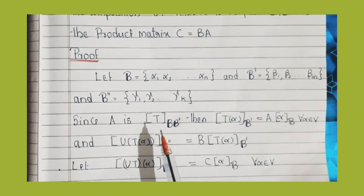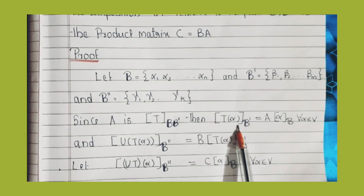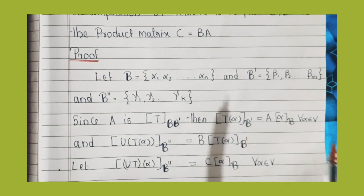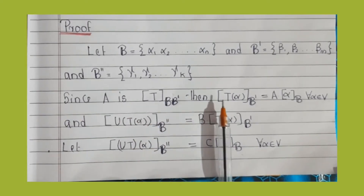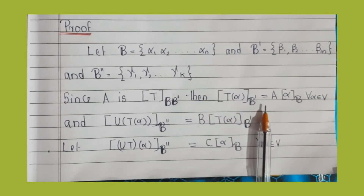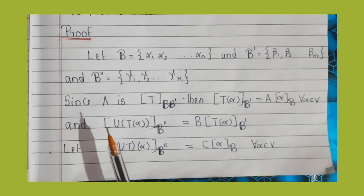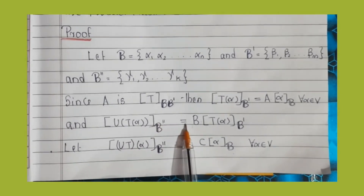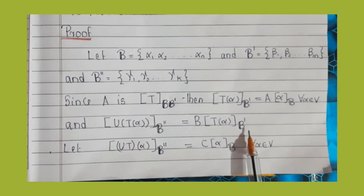Since A is the matrix of T related to BB', then the matrix of T of alpha related to B' is equal to A times the matrix of alpha related to B, for every alpha belonging to V. We then write the matrix of U of T of alpha related to B'' is equal to B times the matrix of T of alpha related to B'.